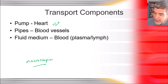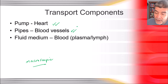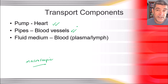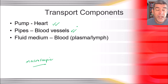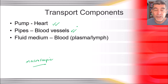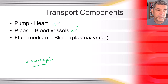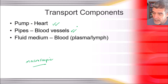The second component is the blood vessels, and there are three types. Arteries and veins can be seen at a macro level; capillaries are a little more difficult to see. But at least you get a chance to understand the pipes through which the fluid is flowing, and the fluid medium itself is blood.